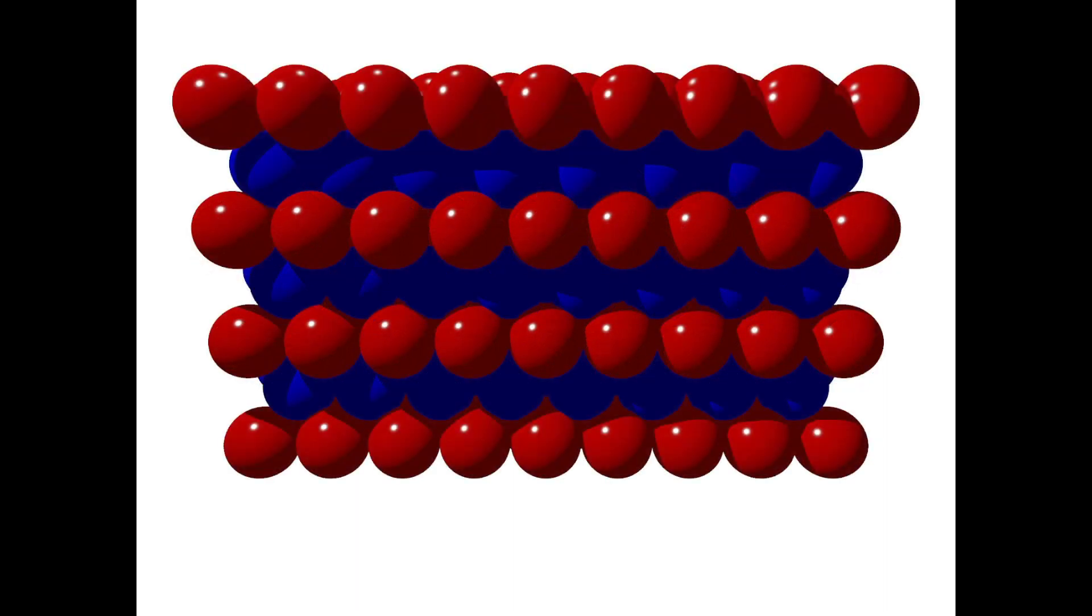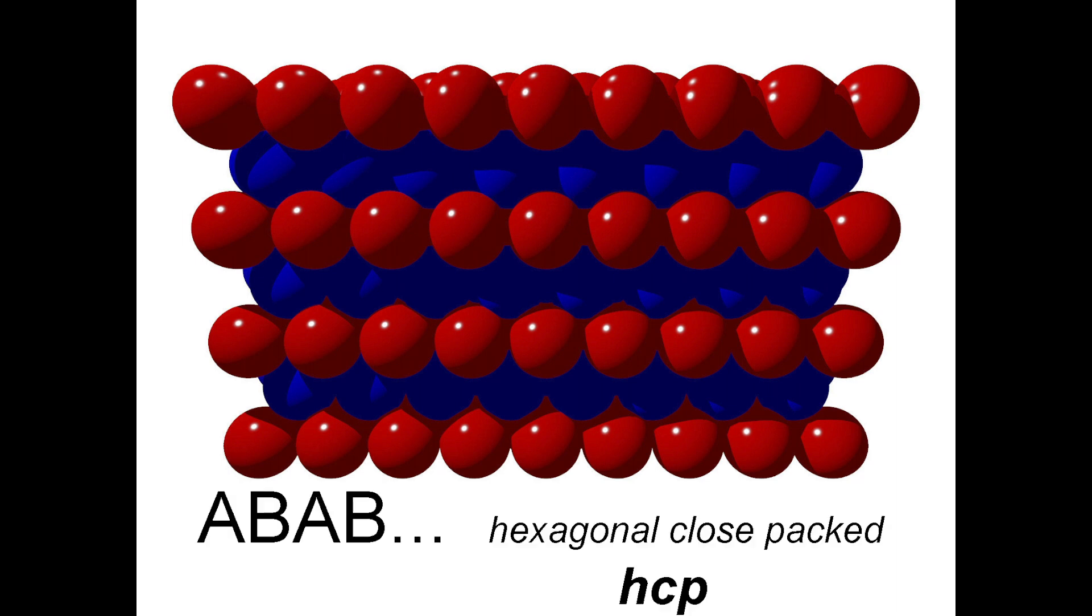We can keep filling in layers above and below to create a three-dimensional structure. This type of three-dimensional close packing structure, in which the layers alternate in position A, B, A, B, and so on, is called hexagonal close packed, or HCP.